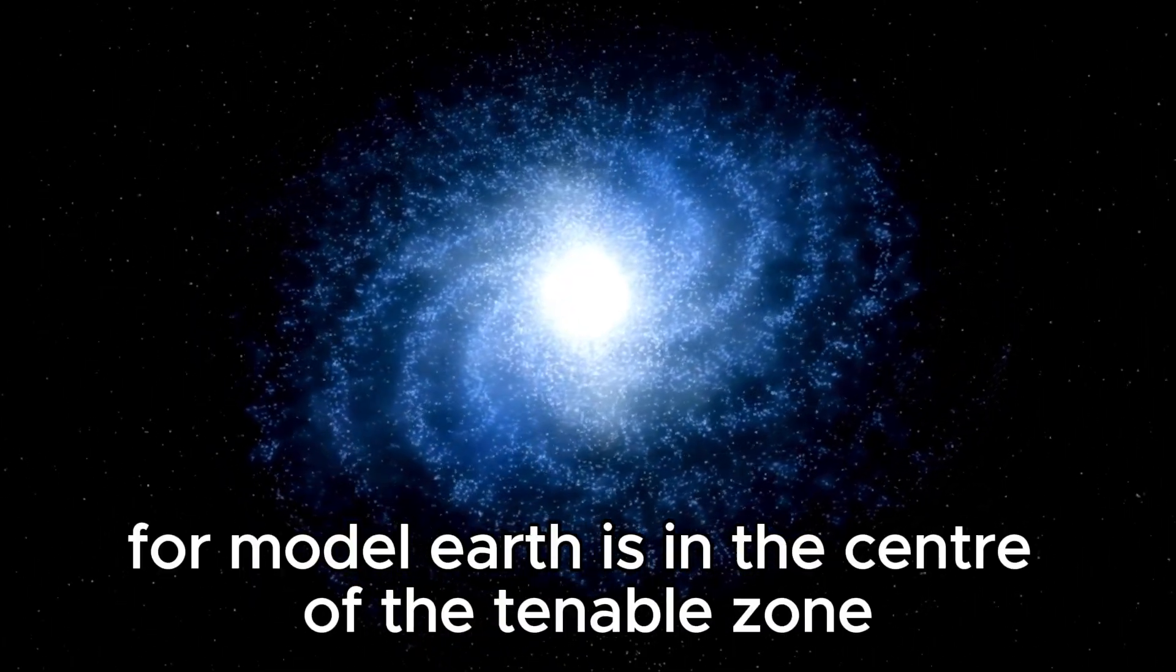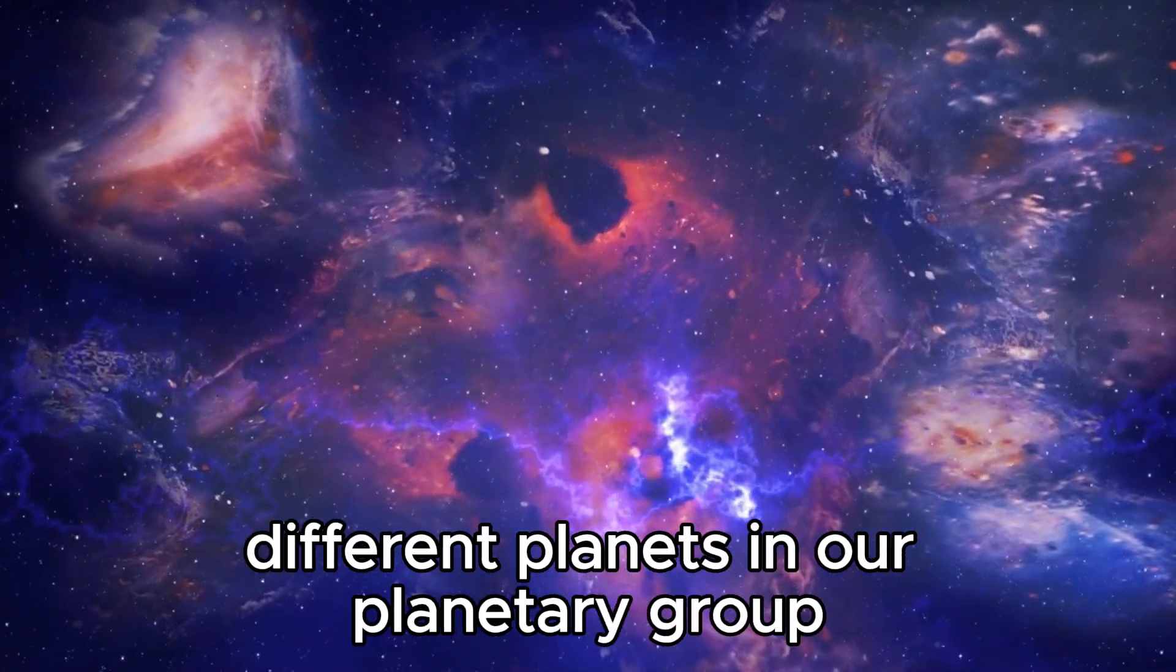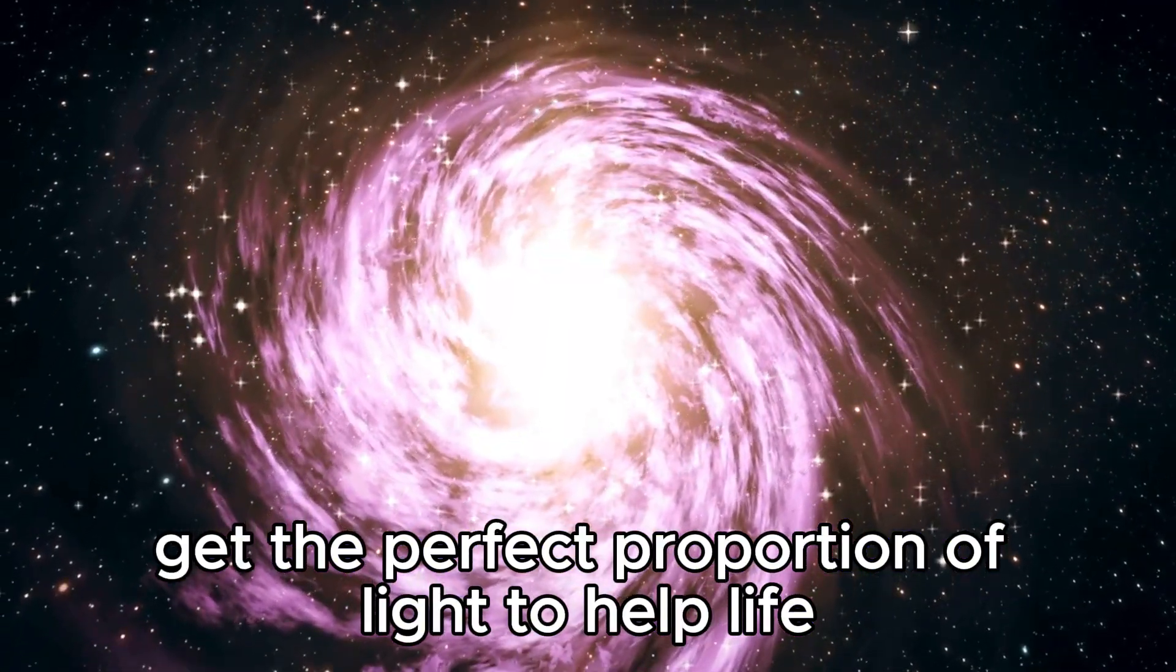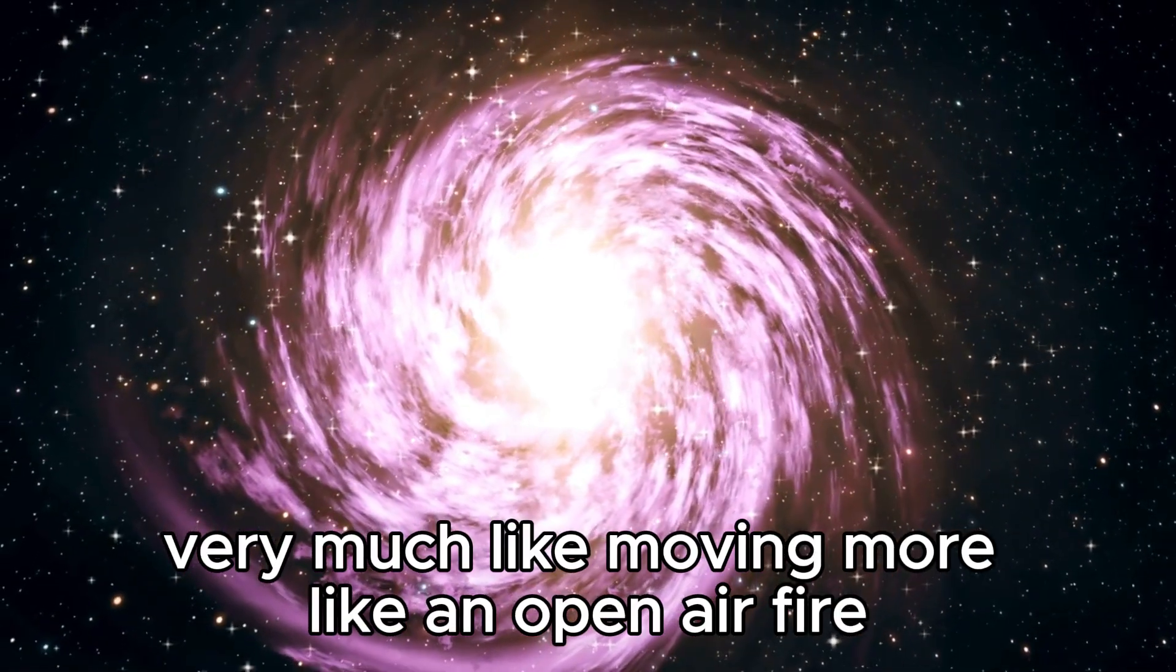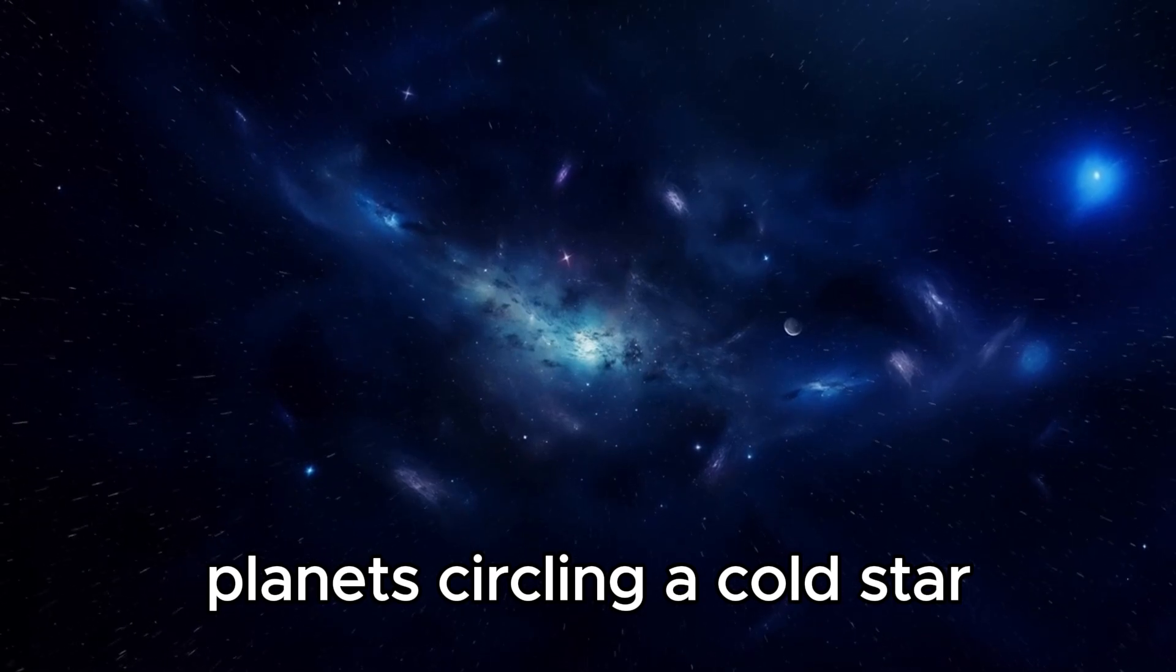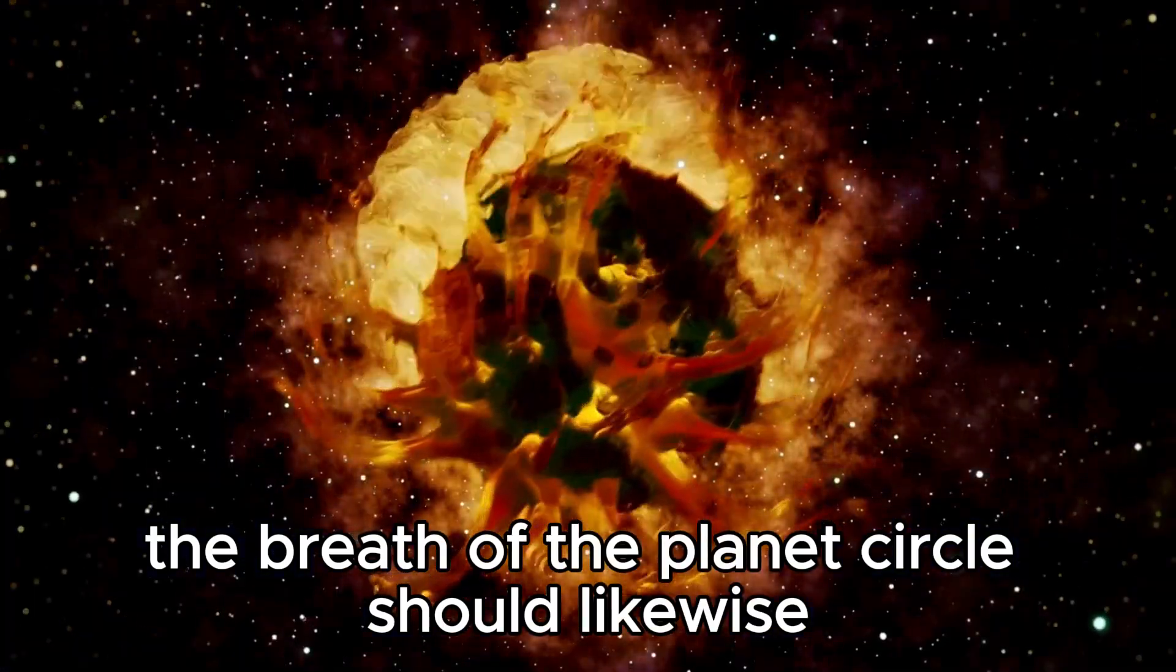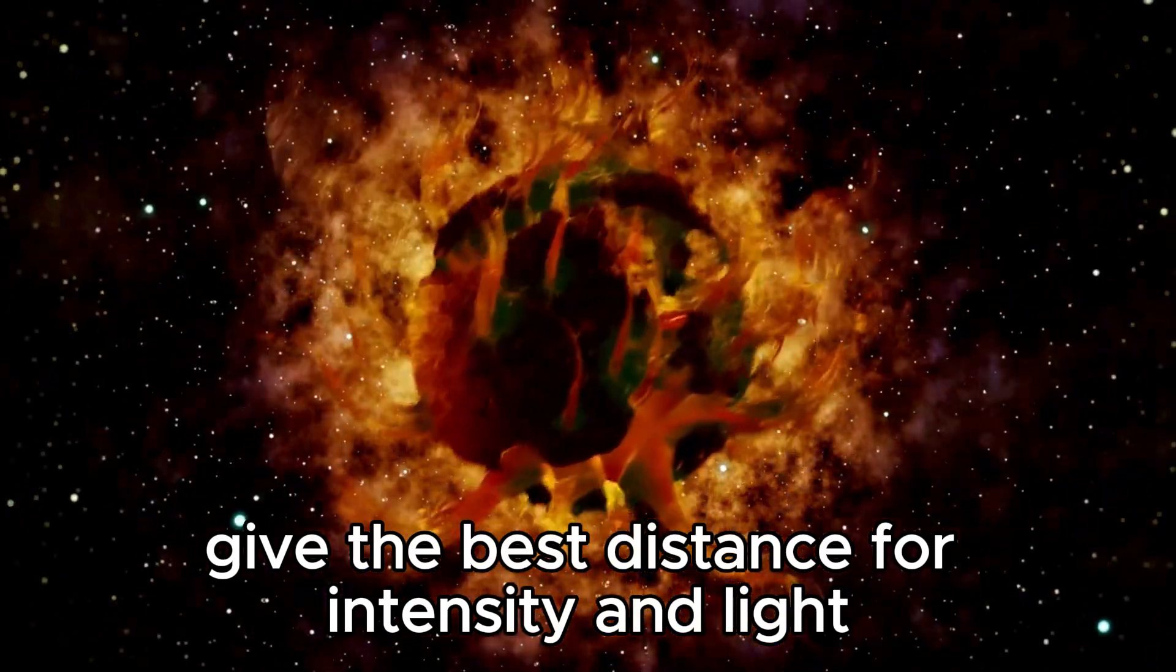For example, Earth is in the center of the habitable zone because of the water and warmth it receives from the sun. Different planets in our planetary system are either too far or too close to receive the perfect amount of light to support life. Now imagine a universe with a very cool star, like moving closer to a campfire. Planets orbiting a cold star should be positioned to receive the ideal amount of heat and light to sustain life. The diameter of the planet's orbit should also be adjusted to provide the best distance for heat and light.